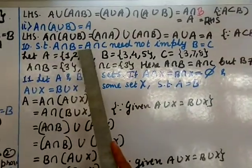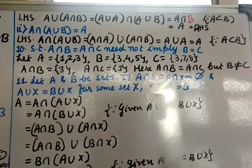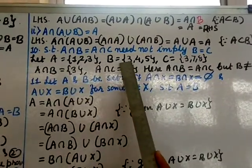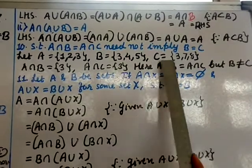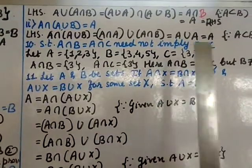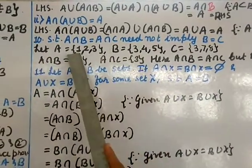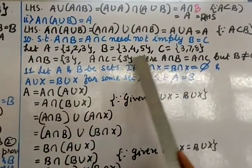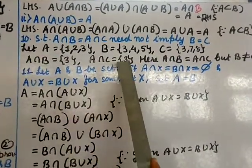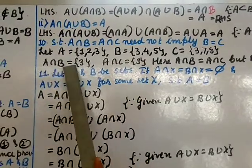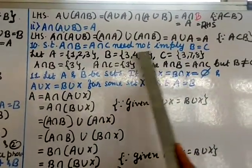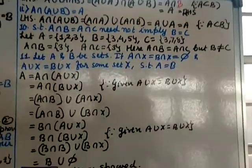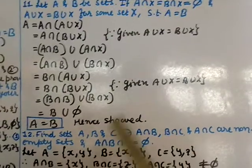Question number ten: show that A ∩ B = A ∩ C does not necessarily imply B = C. Example: let A = {1,2,3}, B = {3,4,5}, C = {3,7,8}. Then A ∩ B = {3} and A ∩ C = {3}, so A ∩ B = A ∩ C. But B = {3,4,5} ≠ {3,7,8} = C. Hence the statement is not necessarily true.